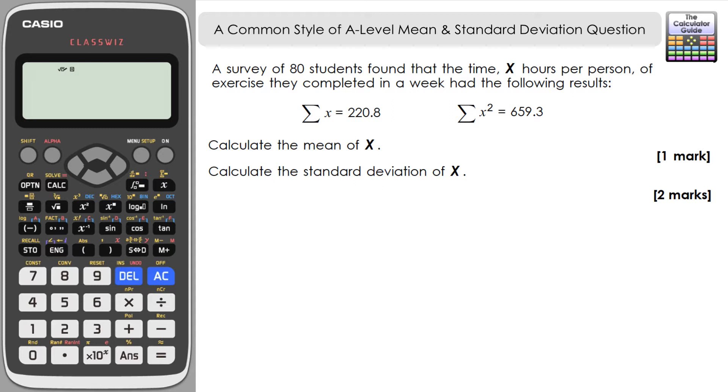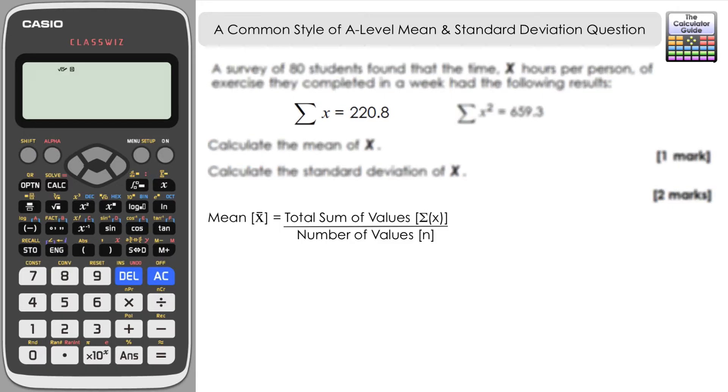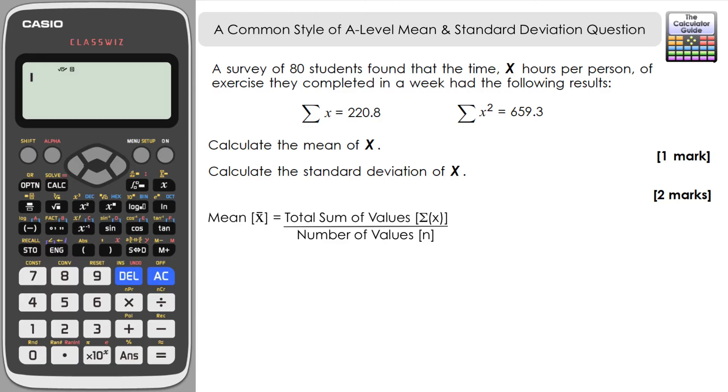Now the mean - if we're coming from GCSE we might have learned this phrase, you add them up and then divide by however many there are. But let's refine it a little bit and call it the sum of the values that we have divided by the number of values. So the sum of the values is the sum of x, that's 220.8, and we're going to divide that by the number of values, which in this example is 80.